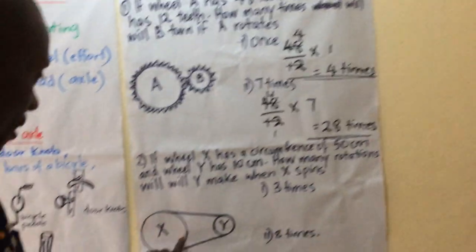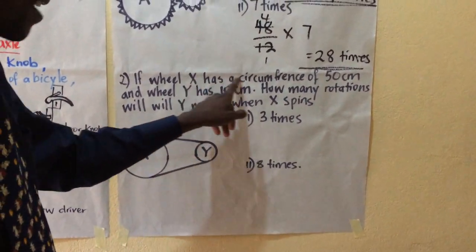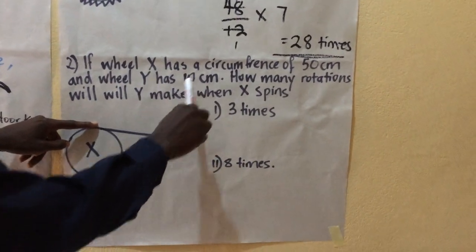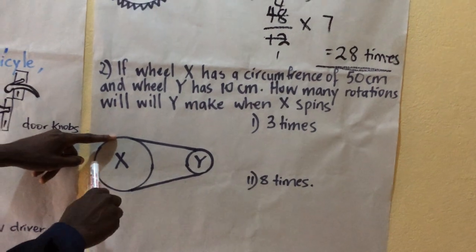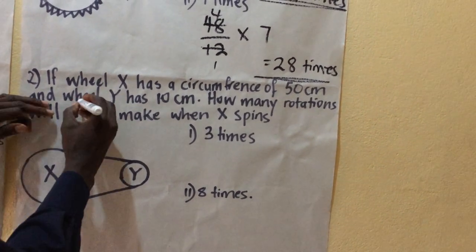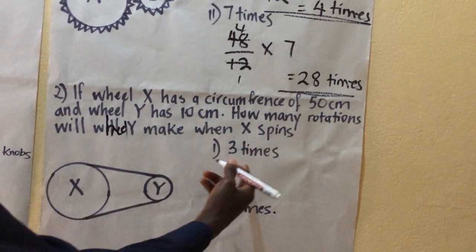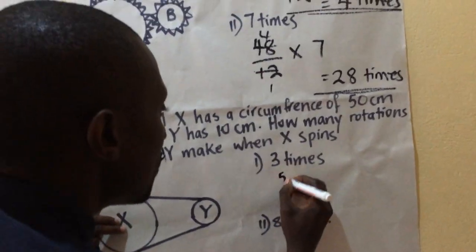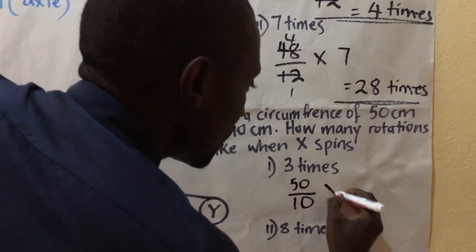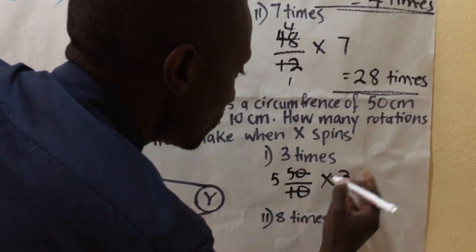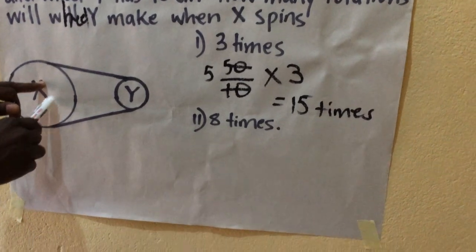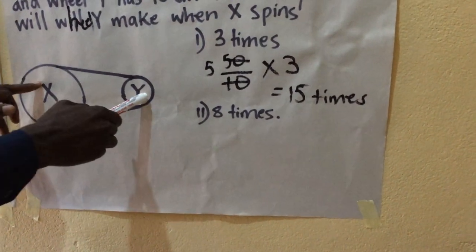Let's go to the second question — this is a chain drive or belt drive. If wheel X has a circumference of 50 centimeters and wheel Y has a circumference of 10 centimeters, we don't have teeth to count but we have these measurements. How many rotations will wheel Y make when X spins three times? The bigger wheel is 50 divided by 10, times three — that is five times three — which gives us 15 times. So when this one spins once, this one will spin five times, and if it spins three times, this one will have spun 15 times.